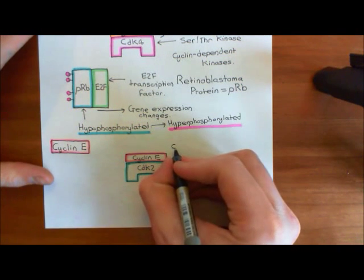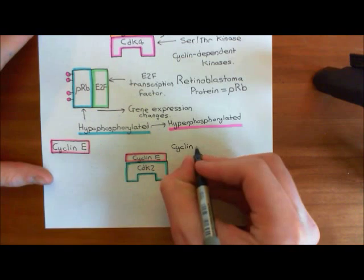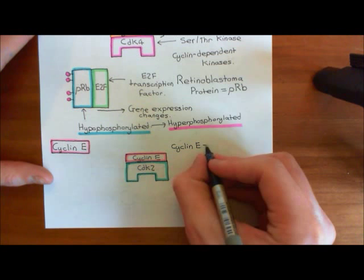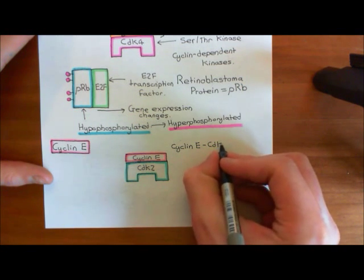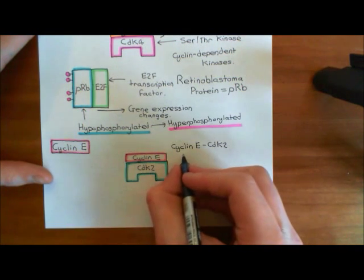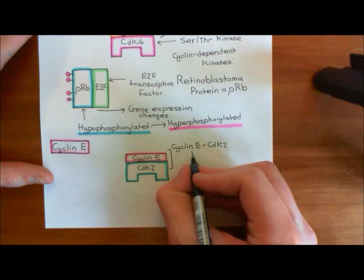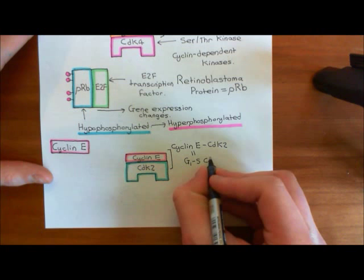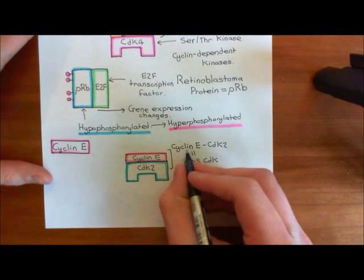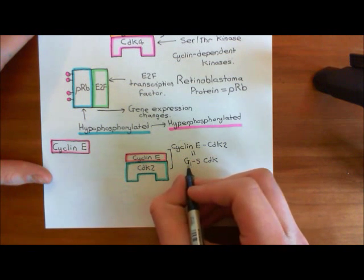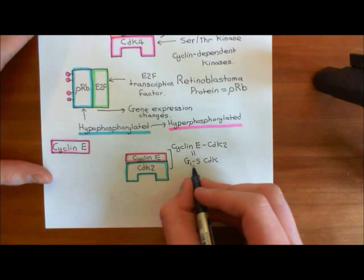Just like the cyclin D-CDK4 complexes had another name — the G1 CDK, named after the G1 phase of the cell cycle — the cyclin E-CDK2 complexes are also called G1S CDKs, because they are the complex of a cyclin-dependent kinase involved in the transition from the first gap phase to the synthesis phase of the cell cycle.